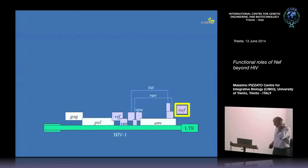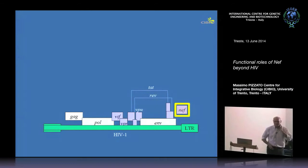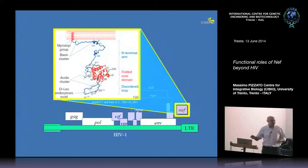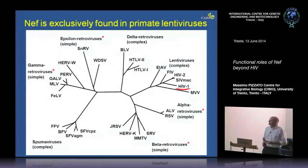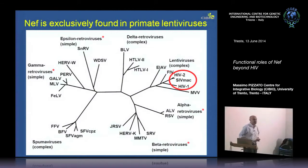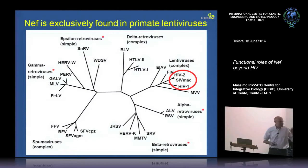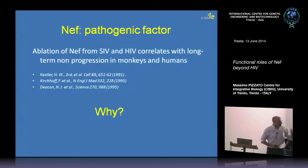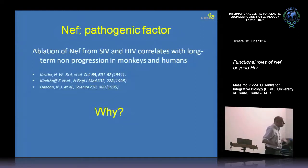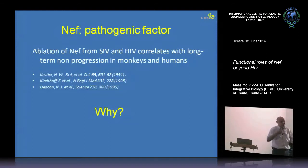Today I'm going to talk about NEF, another protein that remained particularly mysterious for quite a long time. It's a small protein of about 30 kilodaltons, which is myristoylated, so it tends to associate with membranes. It's known to be present only in the genome of lentiviruses that infect primates — HIV-1, HIV-2, and the simian counterpart SIV — so it's a very specific protein in a very small context of the phylogenetic tree.